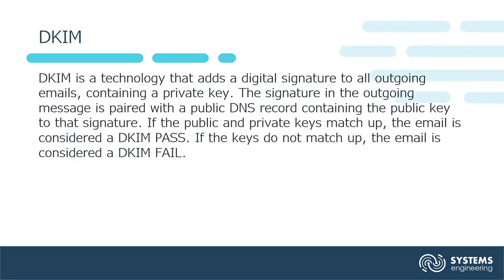Next is DKIM. DKIM is a technology that adds a digital signature to all outgoing emails containing a private key. The signature in the outgoing message is paired with a public DNS record containing the public key to that signature. If the public and private keys match up, the email is considered a DKIM pass. If the keys do not match up, the email is considered a DKIM fail.